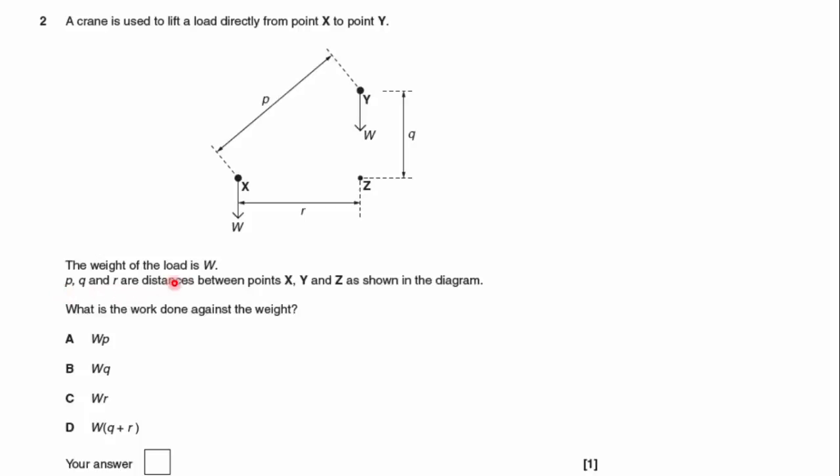P, Q and R are distances between point X, Y and Z, as shown in the diagram. What is the work done against the weight?